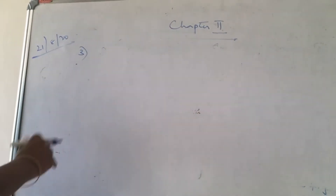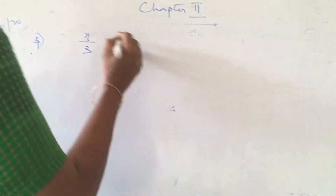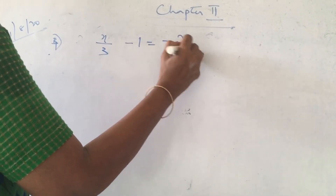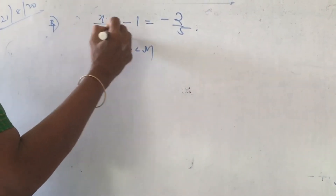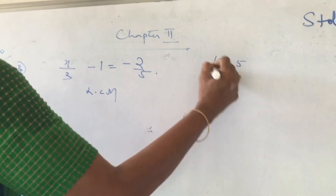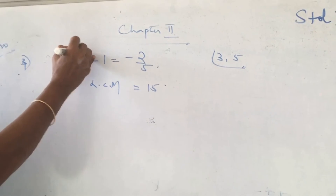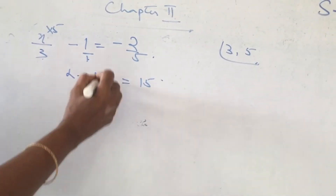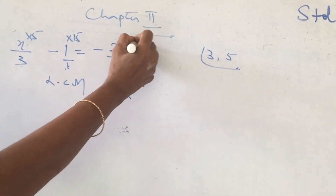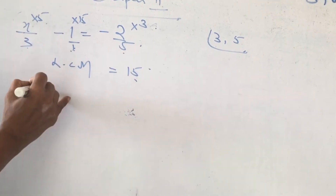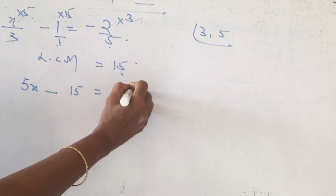Fourth sum: x by 3 minus 1 is equal to minus 2 by 5. When there are different denominators, collect all the denominators in the question and go for the common LCM. LCM is equal to 15. 3 divides 15 five times. The term with no denominator has denominator 1, which divides 15 fifteen times. 5 divides 15 three times. So we get: 5 into x is 5x, 15 into 1 is 15, and 3 into 2 is 6.